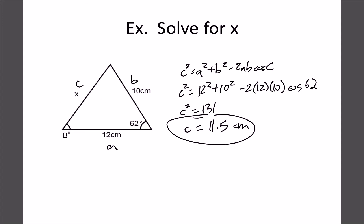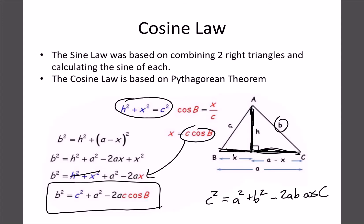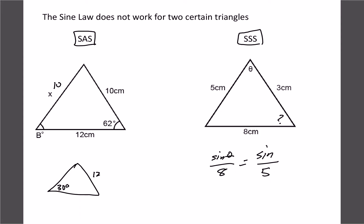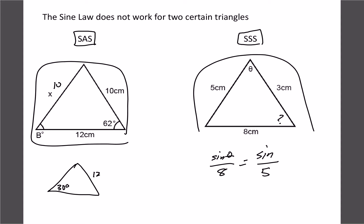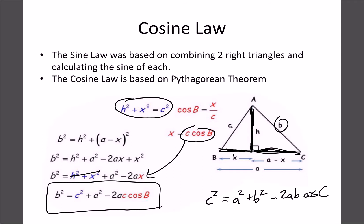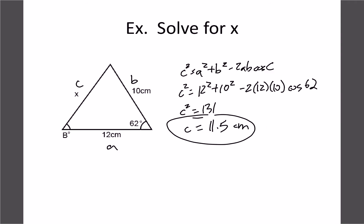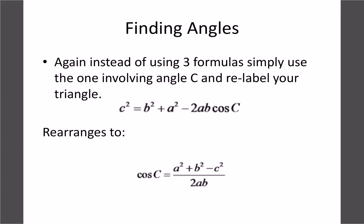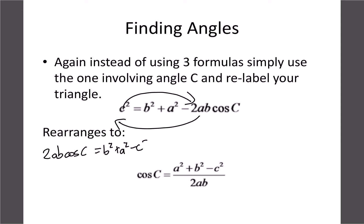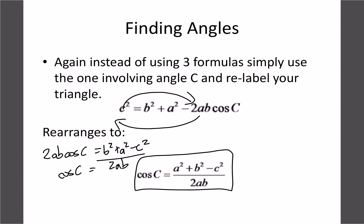For side-side-side questions we're still using the same formula, but we rearrange it to solve for the angle. Taking c² = a² + b² − 2ab·cos C and rearranging: bring 2ab·cos C to the other side, then move c² across, giving 2ab·cos C = a² + b² − c². Divide both sides by 2ab, and we have the formula for finding an angle.